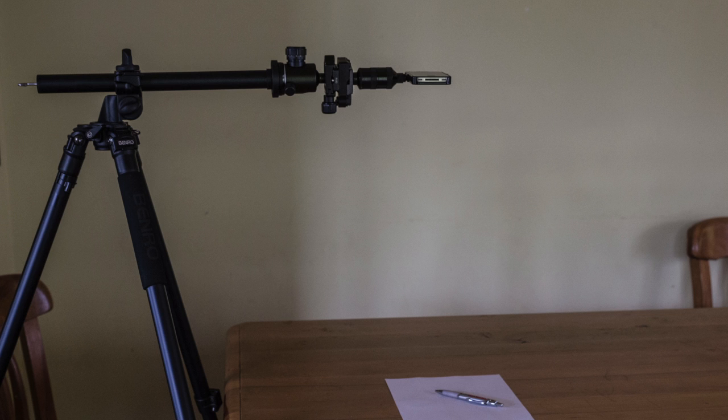Another useful item in a tripod, and this really does only come in slightly more expensive models, is a center column that you can put horizontal. If you can do that, that's really good for going down on documents, and you'll see when you get to the over-the-shoulder style of things how useful that can be.